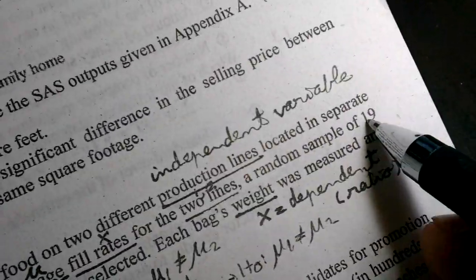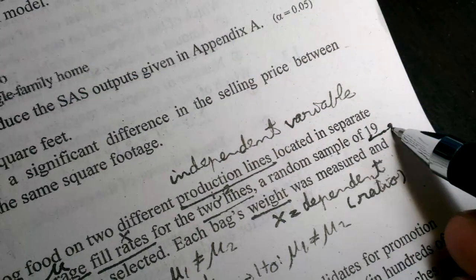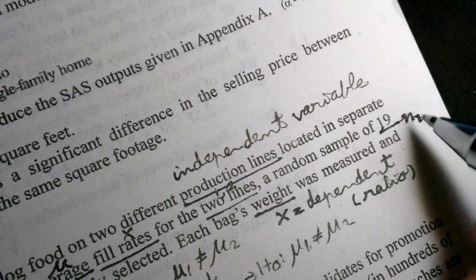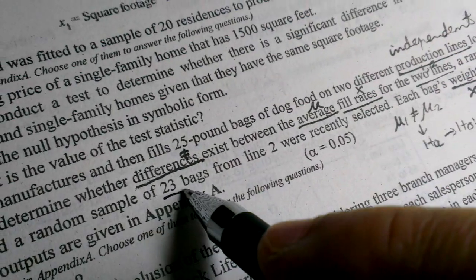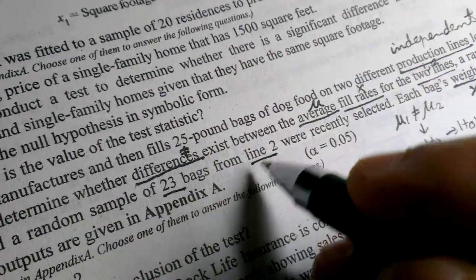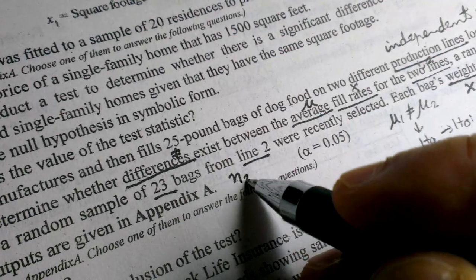So the particulars are line 1, 19 bags from line 1, sample size of sample 1.